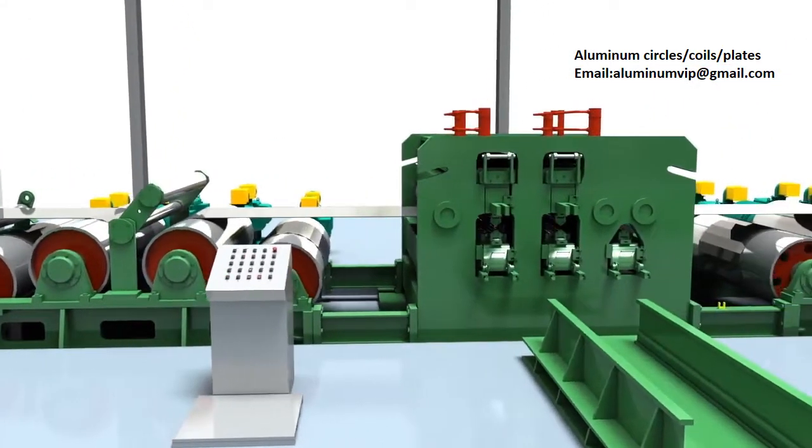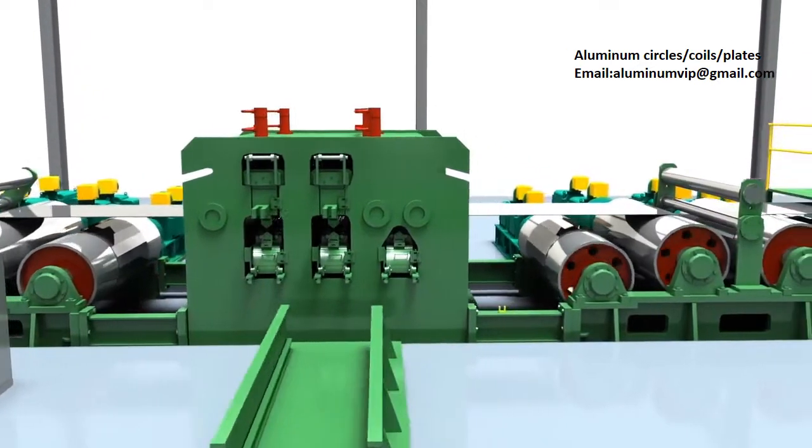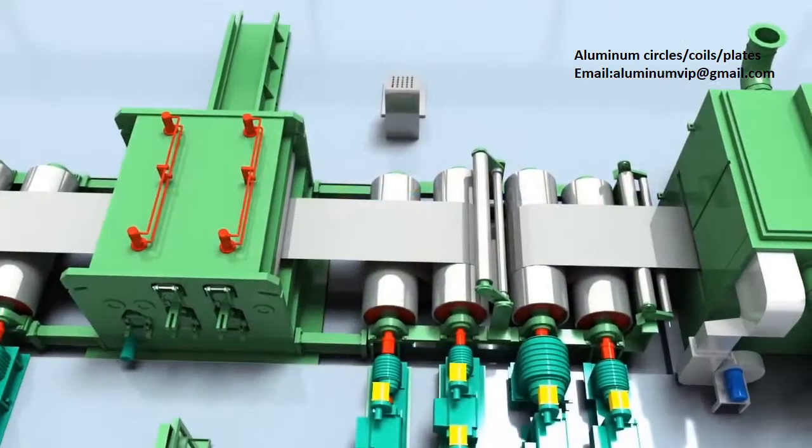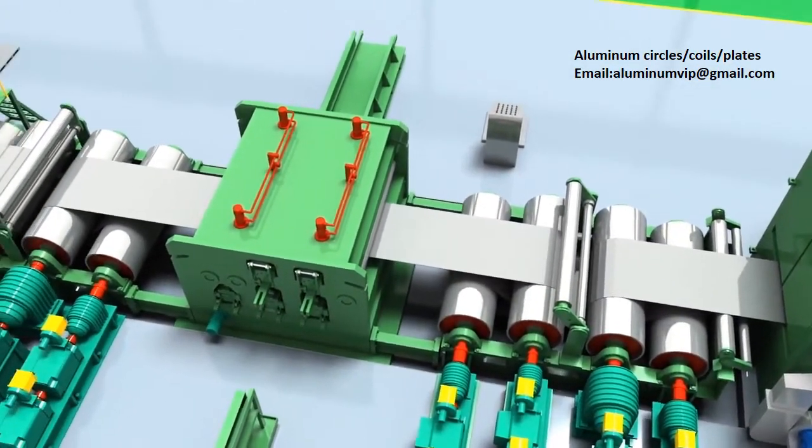After the coil is cooled, it is placed in the tension leveler and runs through a system to create an even level surface for the desired finished product.